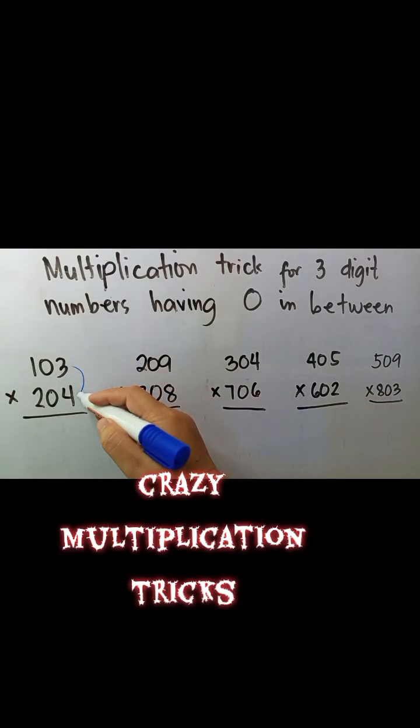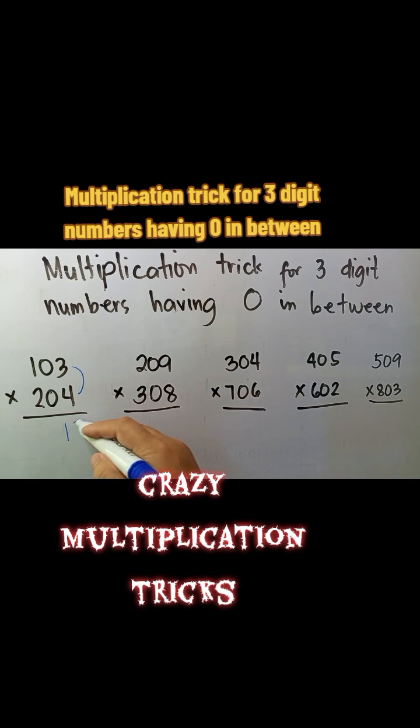Crazy Multiplication Tricks. Multiplication trick for three-digit numbers having zero in between.